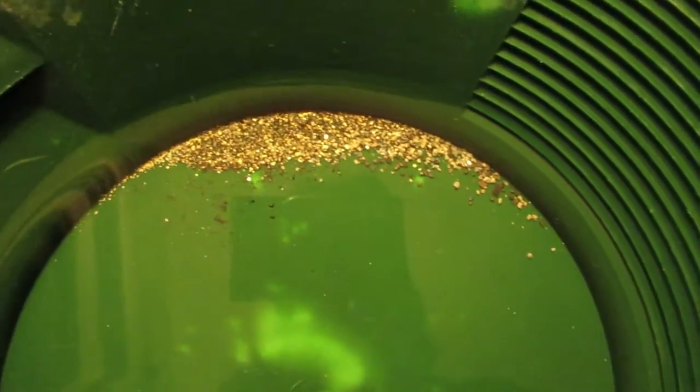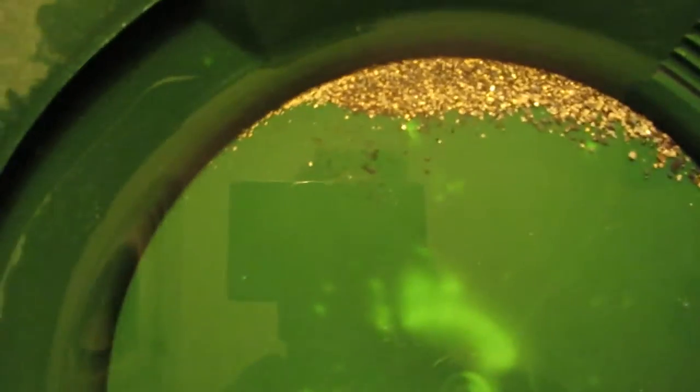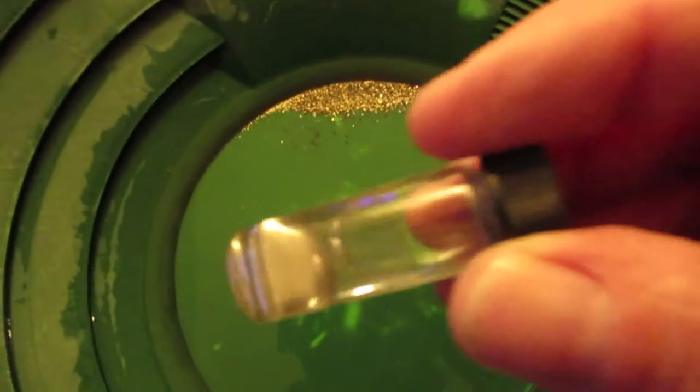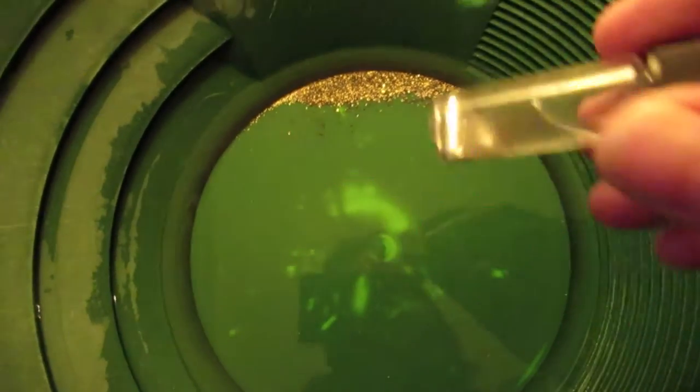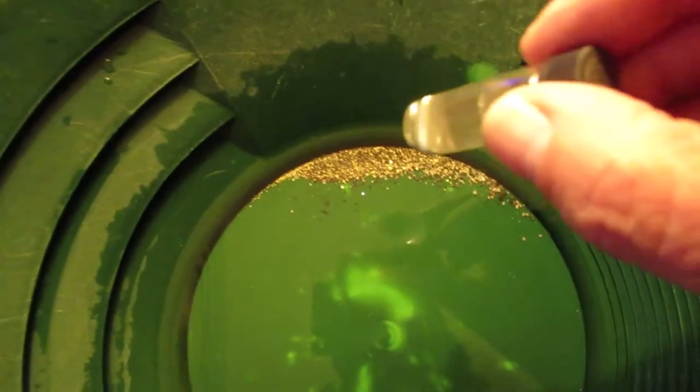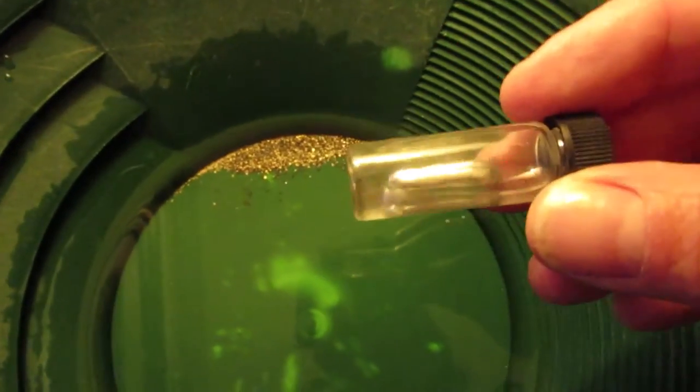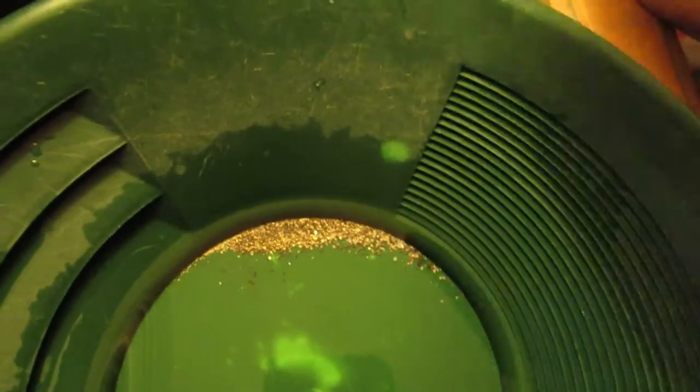So now what I'm going to do with that is I'm going to dump in this, a lot of mercury there. I'm going to suck up all that gold with this mercury. And then later on I'll take that out and I'll burn off the mercury.